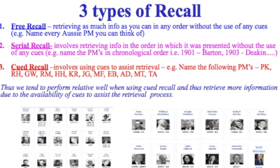The first type is free recall, where we simply ask people to retrieve information from their passive LTM and put it back into their conscious STM without giving them any cues and without worrying about any type of serial order. For example: name every one of the 30 Prime Ministers that we've had since Federation.